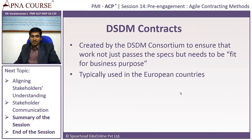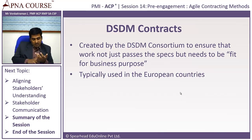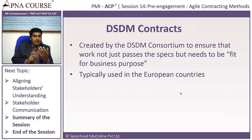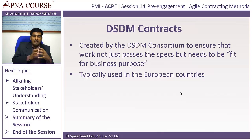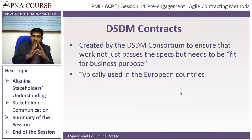These are the different contracts we've covered: change for free, money for nothing, 60/40/20, and the graduated approach where you pay higher for finishing early. We also talked about DSDM.